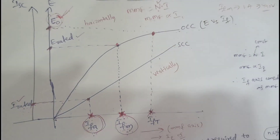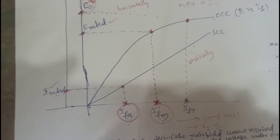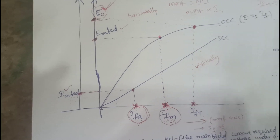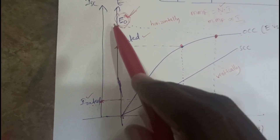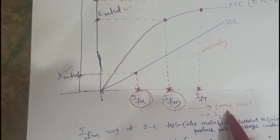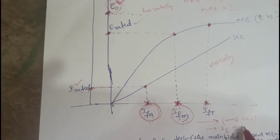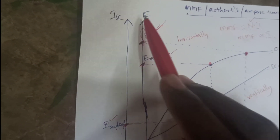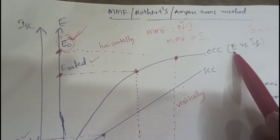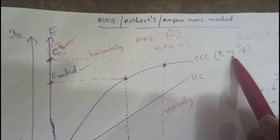This method involves two tests: the OC test and the SC test. The X-axis represents the field current, or MMF axis, and the Y-axis represents the induced EMF. The OCC characteristics are drawn between induced EMF versus field current.